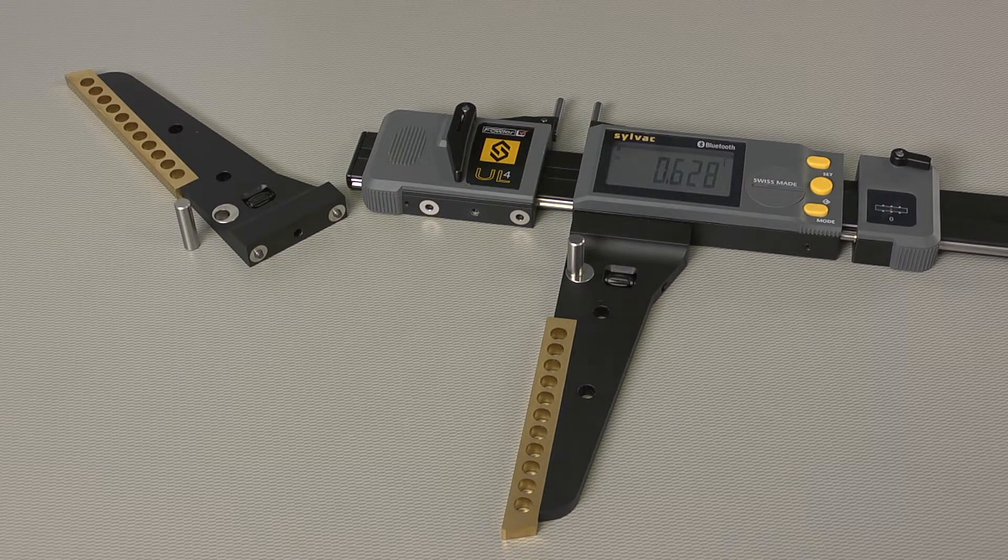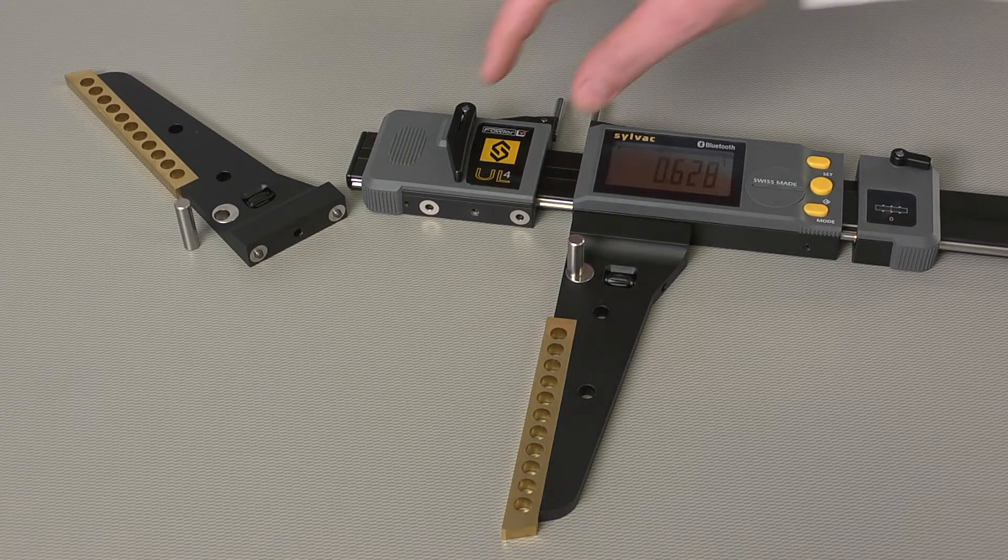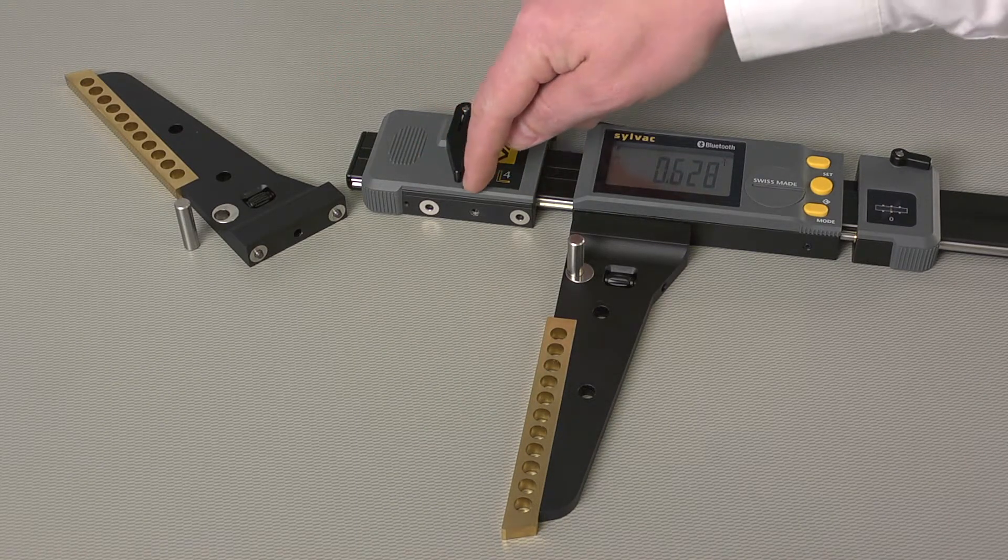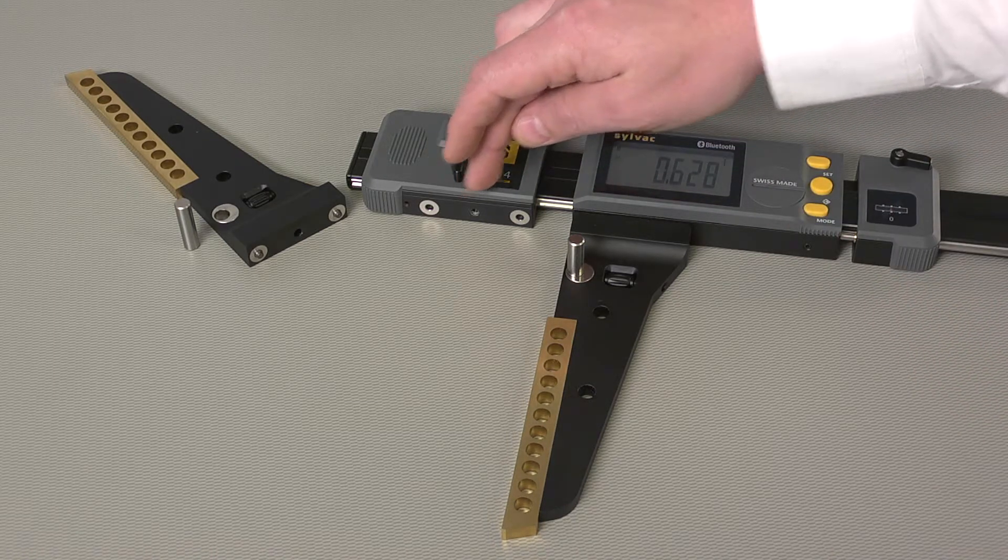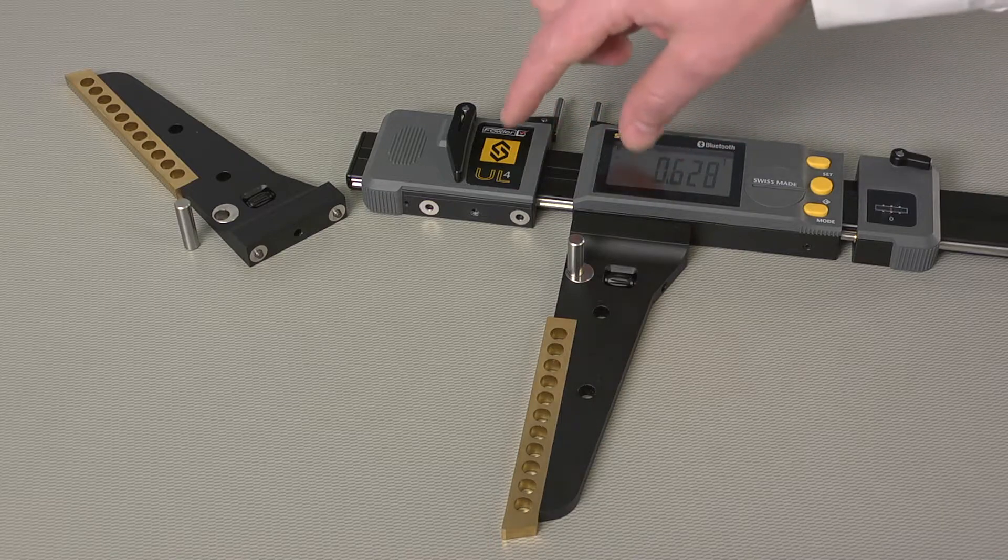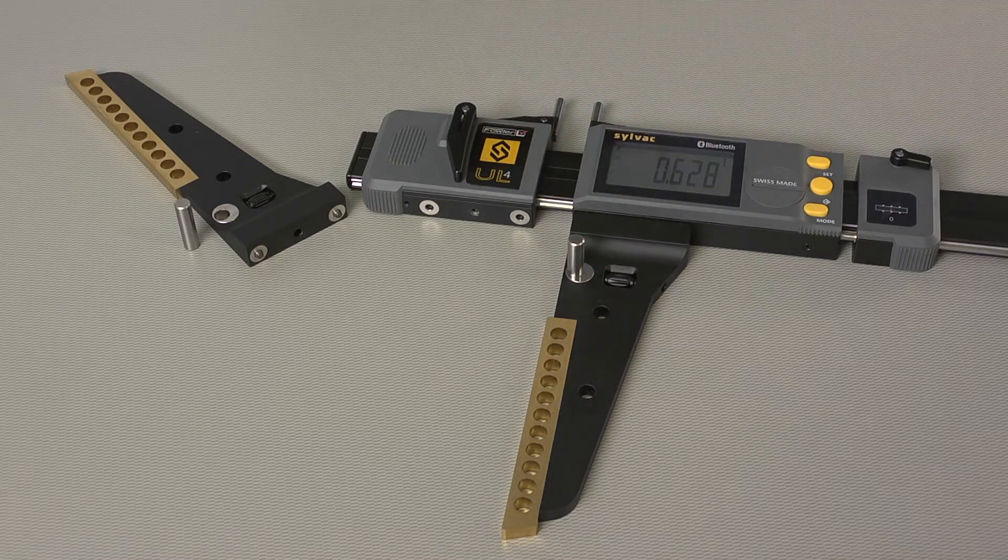The Ultralight 4 also features a removable jaw system, with two locating pins, and a threaded receiver in the center. This pattern is repeated on both sides of the jaw, on the lower and upper side of the frame.